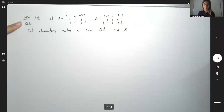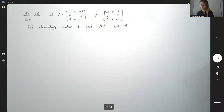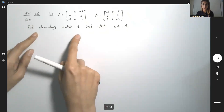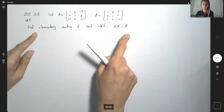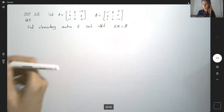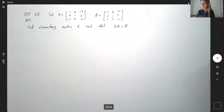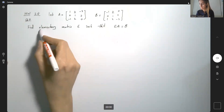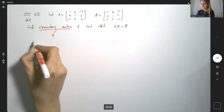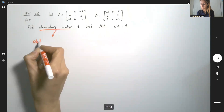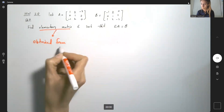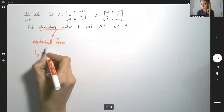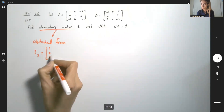Question nine says: suppose you have two matrices A and B given to you, find an elementary matrix E such that E times A gives you B. First of all, remember, when you're talking about an elementary matrix, that matrix is obtained from the identity matrix — in this case, the identity matrix of size three.